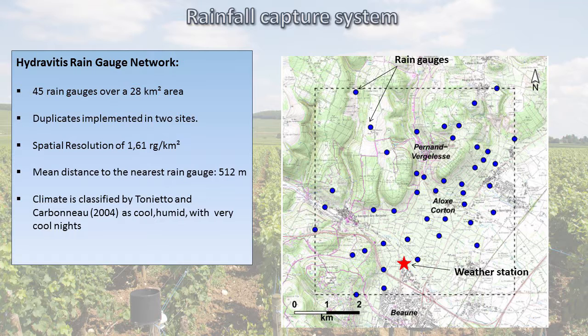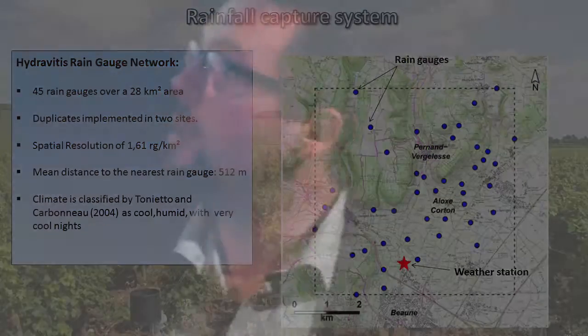That is why we implemented in 2012 the HydraVitus rain gauge network. It is composed of 45 rain gauges over a 20 square kilometer area. We have two duplicates on the area. The spatial resolution is about 1.6 rain gauges per square kilometer. The mean distance to the nearest rain gauge is about 500 meters, and the climate over the area is classified as cool humid with very cool light.